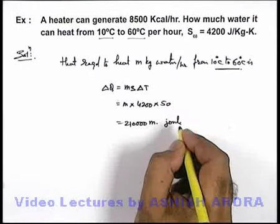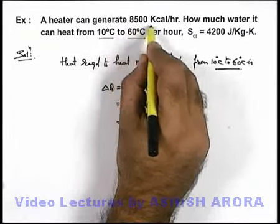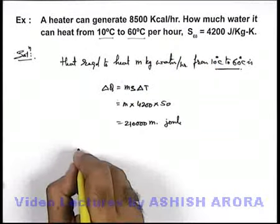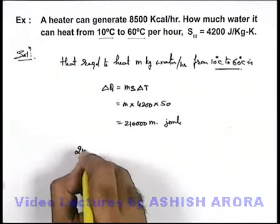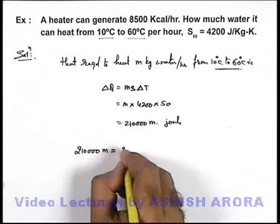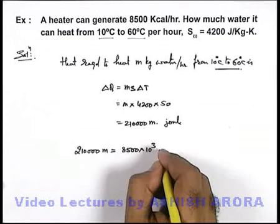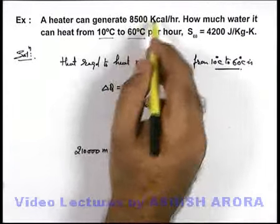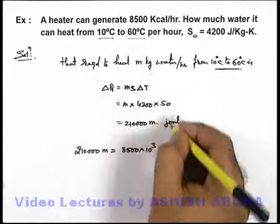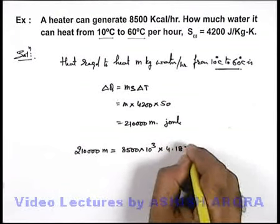In this situation we can state that the total amount of heat which the heater is generating is 8500 kilocalories per hour. So we can write: 210,000m must be equal to 8500 into 10 to the power 3, and we transform this heat into joules by multiplying by 4.187.